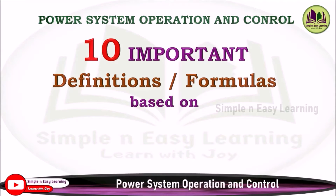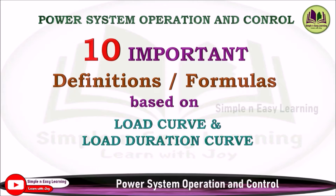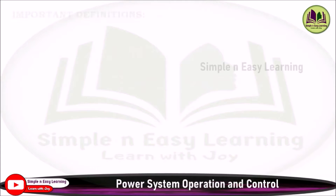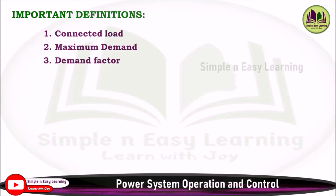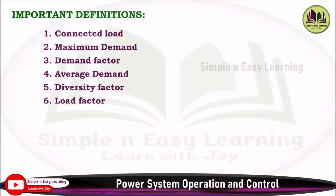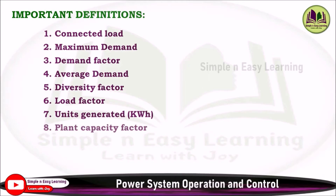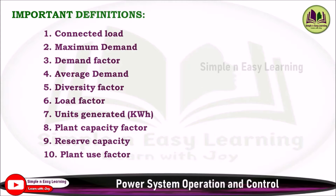10 important definitions and formulas based on load curve and load duration curve. The important definitions are: connected load, maximum demand, demand factor, average demand, diversity factor, load factor, units generated, plant capacity factor, reserve capacity, and plant use factor. Let's see the definitions and formulas for these important terms.